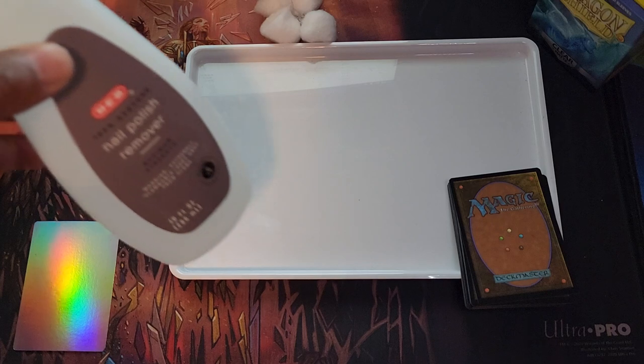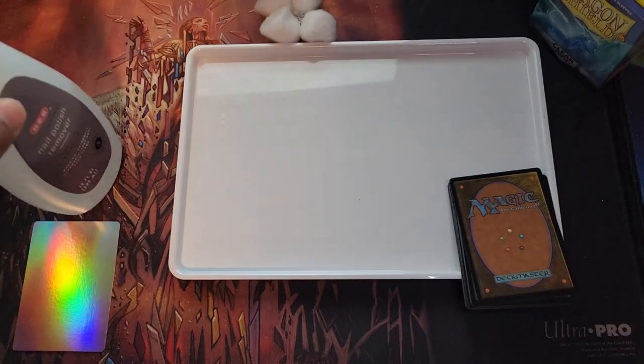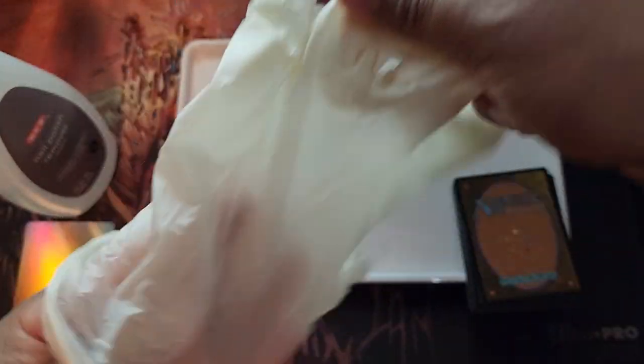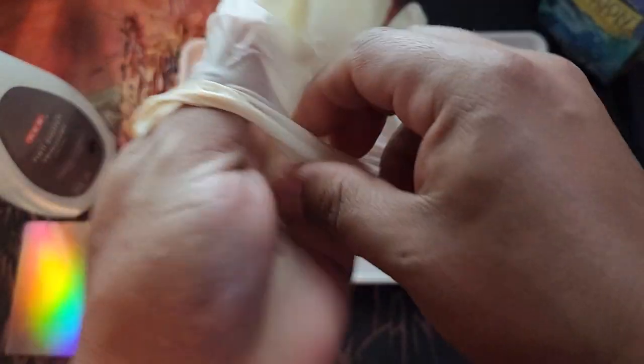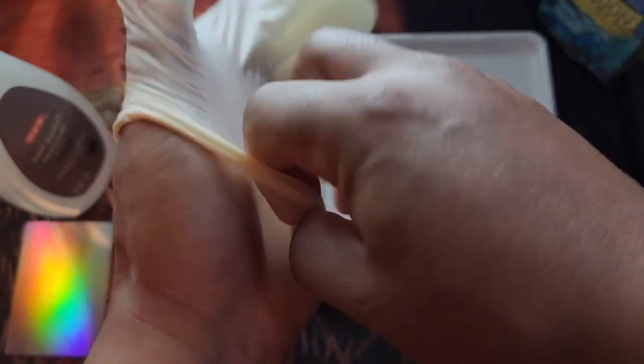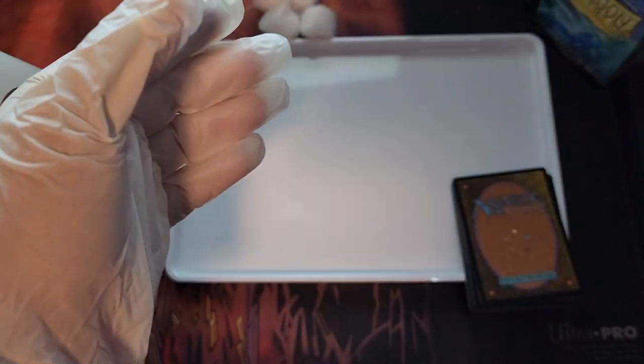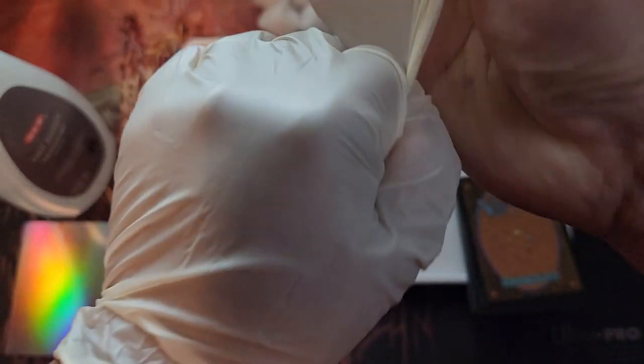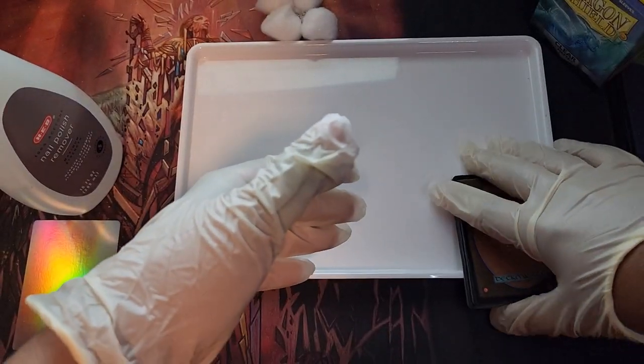All you need to do is get some nail polish remover, some cotton balls, grab a stack of some foil cards that you want to remove the artwork from and of course put on some gloves because the nail polish remover will dry out your hand. So I'm going to slip those on real quick and then I'm going to grab my stack of foil cards to show you how easy it is to remove the artwork.